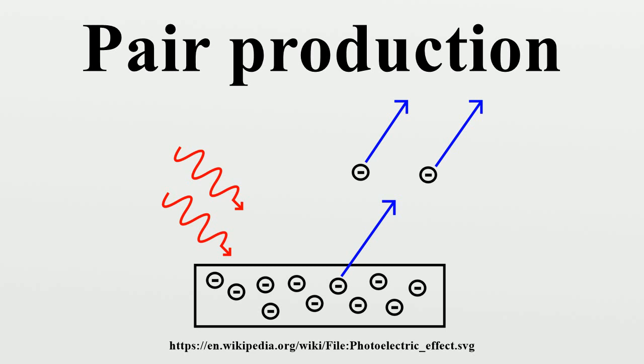If the photon is near an atomic nucleus, the energy of a photon can be converted into an electron-positron pair. The photon's energy is converted to particle mass through Einstein's equation, E equals mc squared, where E is energy, m is mass, and c is the speed of light. The photon must have higher energy than the sum of the rest-mass energies of an electron and positron for the production to occur.